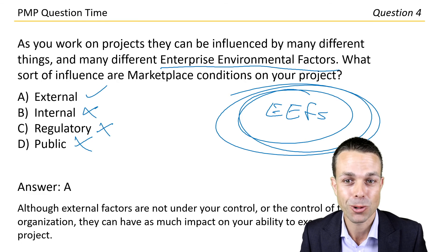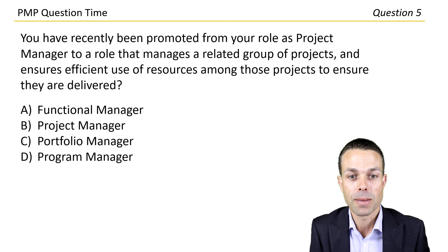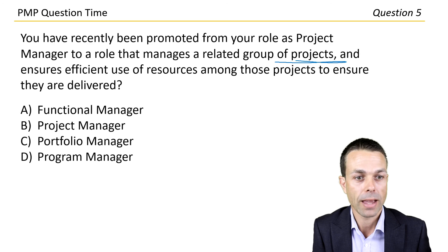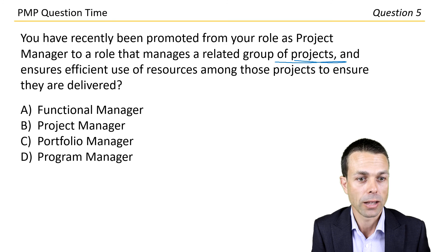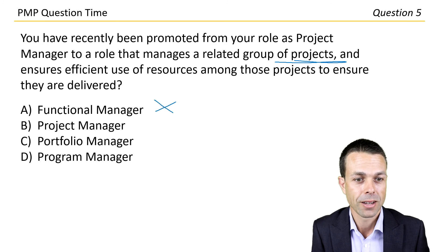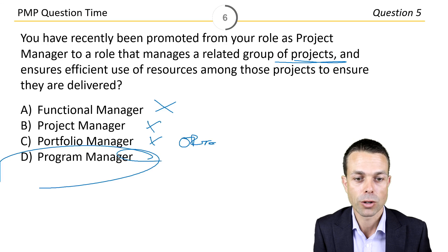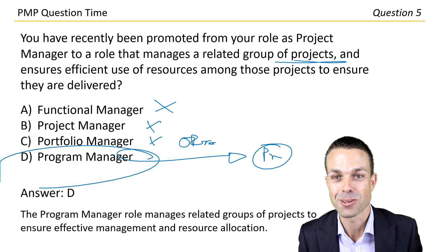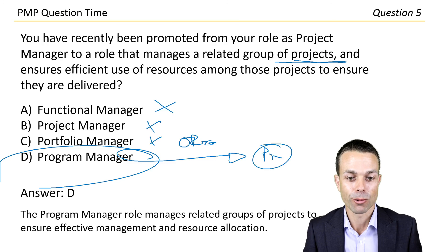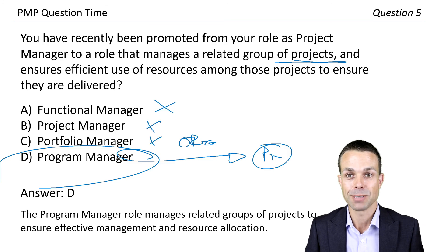We're up to the last question — question five. You have recently been promoted from your role as project manager to a role that manages a group of related projects and ensures efficient use of resources among those projects to ensure they're delivered. Not the functional manager, not the project manager — portfolio would include operations as well. Program manager manages multiple projects, so that's the most promising one. Let's go with letter D. The program manager role manages related groups of projects to ensure effective management and resource allocation.